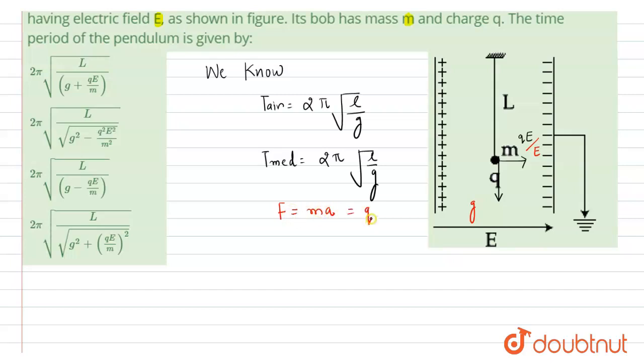But force equals q times E, that is electric field. So using this equation, we get a equals qE divided by m. q is charge of bob, E is electric field, m is mass.